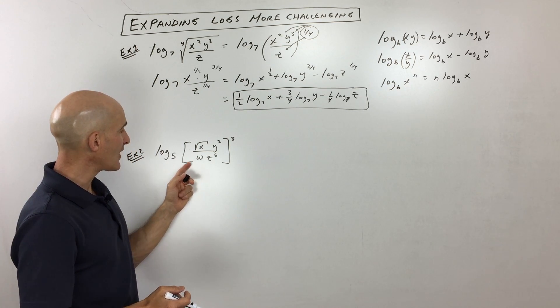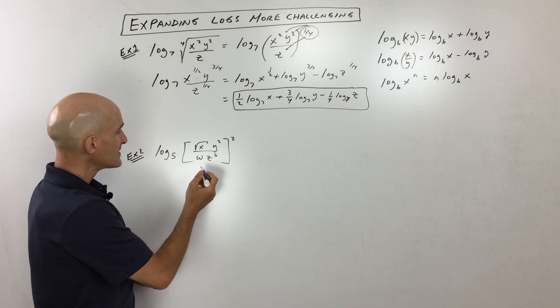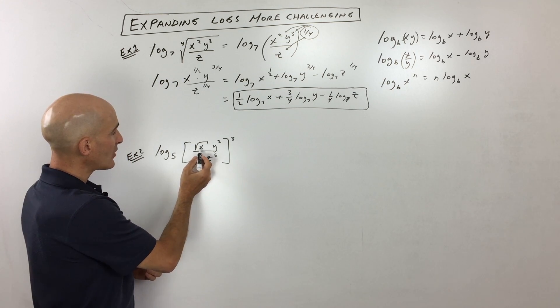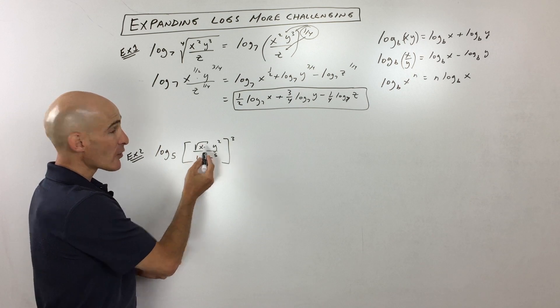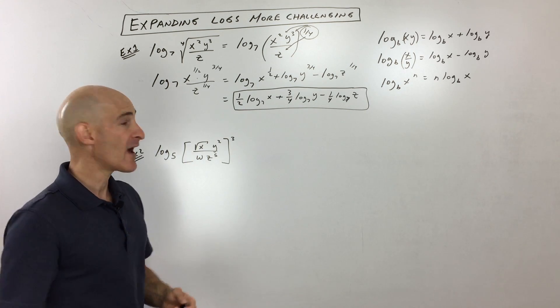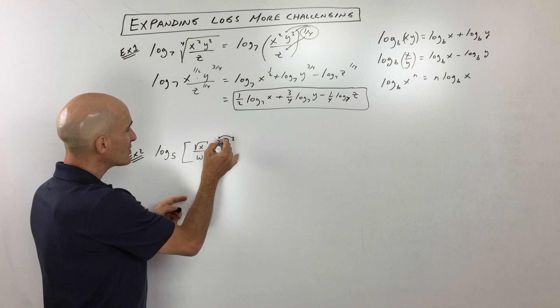So this one, same kind of idea, but what I'm going to do here is I'm going to rewrite this a little bit. So instead of writing this as the square root of x, let's think about it as x to the one-half power. So when we distribute this three in here,